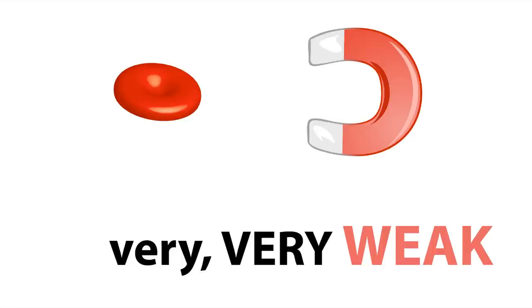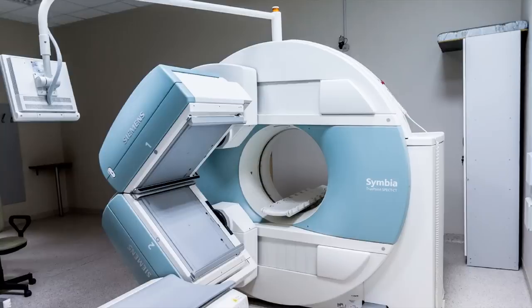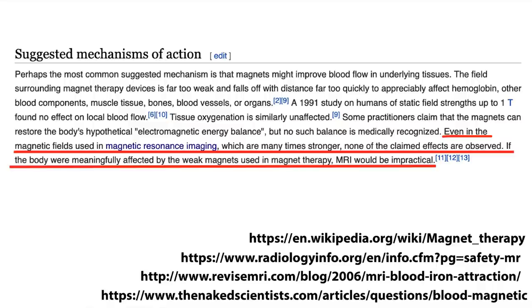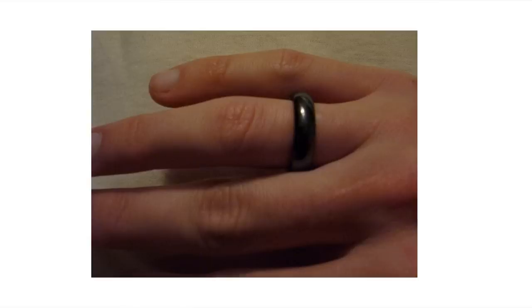It's so weak that to observe even a slight attraction would require an industrial-sized magnet, like the kind inside an MRI machine. And even then, the attraction is barely noticeable. In fact, the attraction is so weak that an average static magnet, even a neodymium magnet, are magnitudes too low to exploit any attraction.